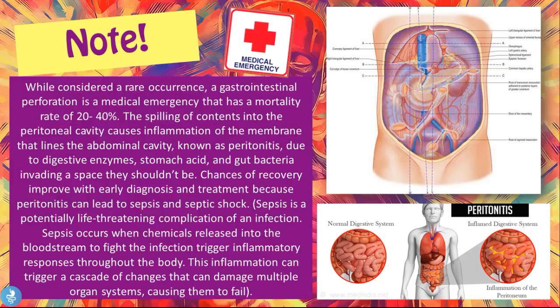For those who don't know what sepsis is, sepsis is a potentially life-threatening complication of an infection. Sepsis occurs when chemicals released into the bloodstream to fight the infection trigger inflammatory responses throughout the body. This inflammation can trigger a cascade of changes that can damage multiple organ systems, causing them to fail.